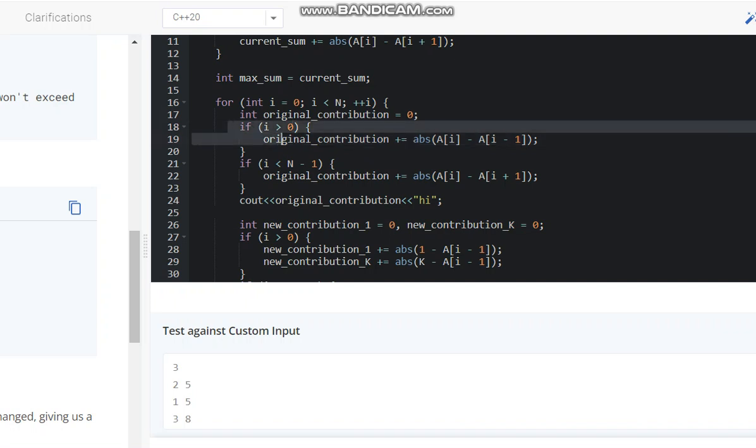The original contribution is A[i] minus A[i-1], if i is greater than zero. Ensuring that if it is the first element, then it would go to this loop where it would be A[i] minus A[i+1].